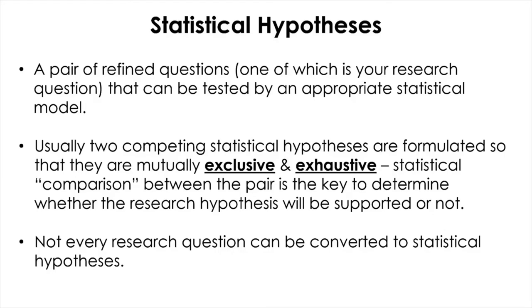Once you're done with literature search and review, you need to convert your research hypothesis into statistical hypotheses — a pair of refined research questions to be tested with a statistical model. Again, not every research question is subject to this process if your research is mainly descriptive or qualitative in nature. In setting up statistical hypotheses, you need to formulate two competing hypotheses so that they are mutually exclusive and exhaustive. Mutual exclusivity means there should be no overlap between the two statements so that only one can be chosen after a statistical test.